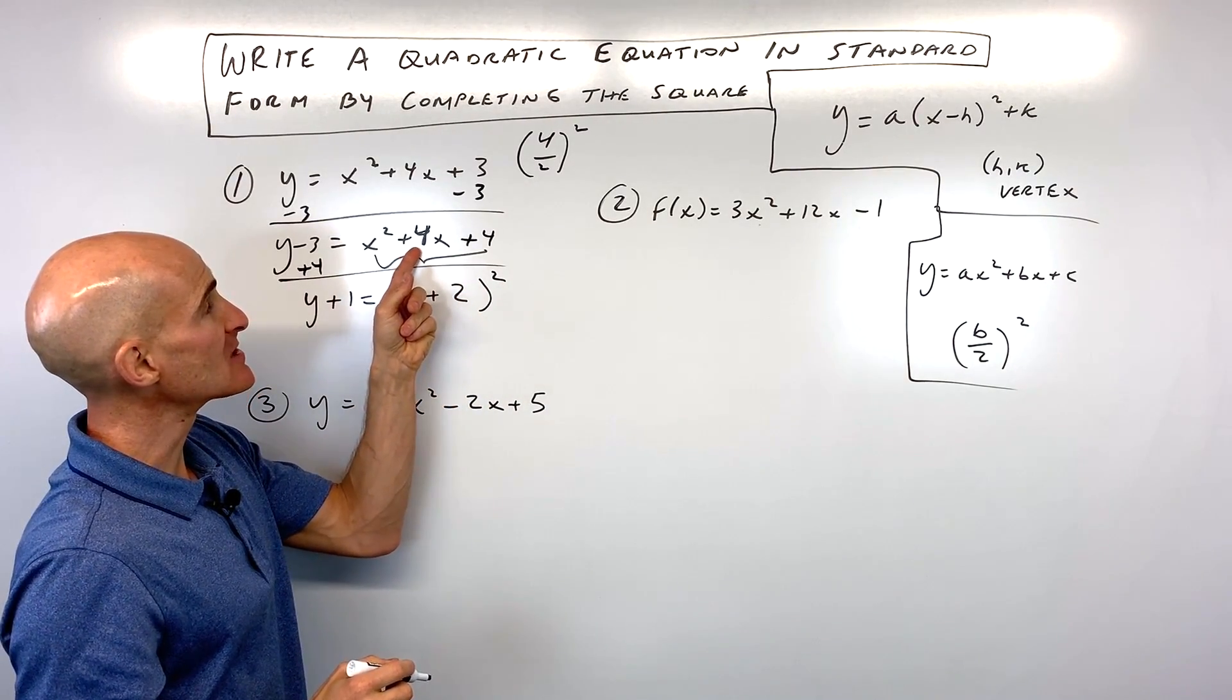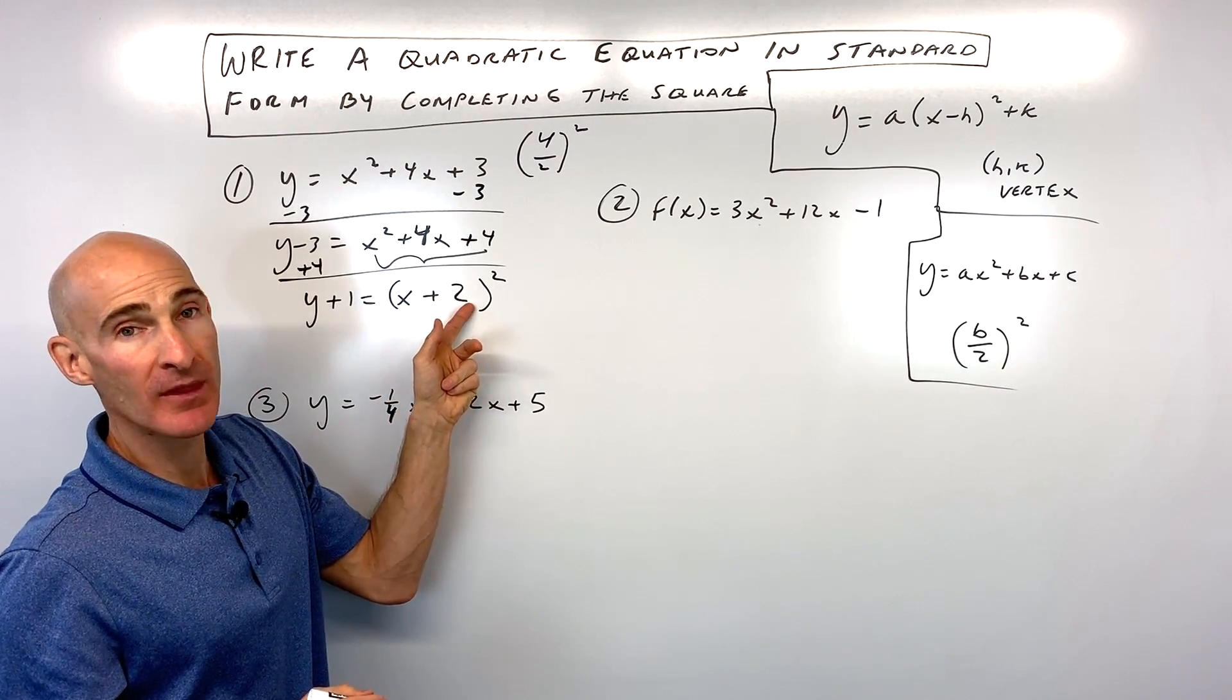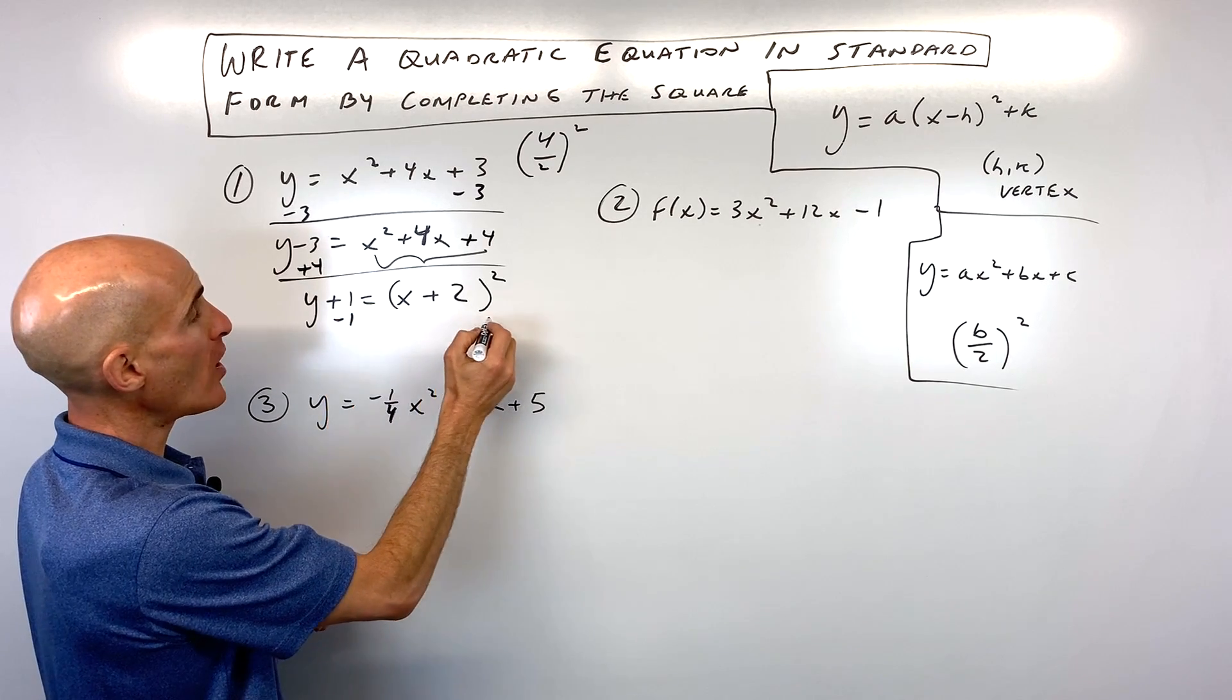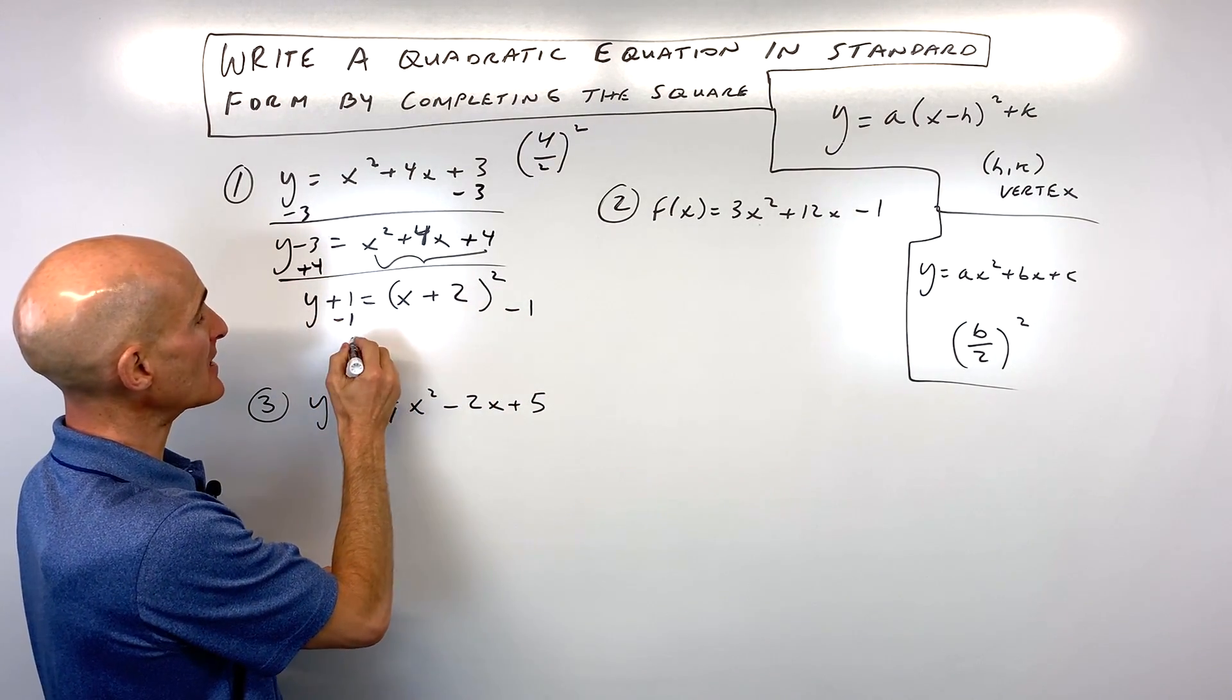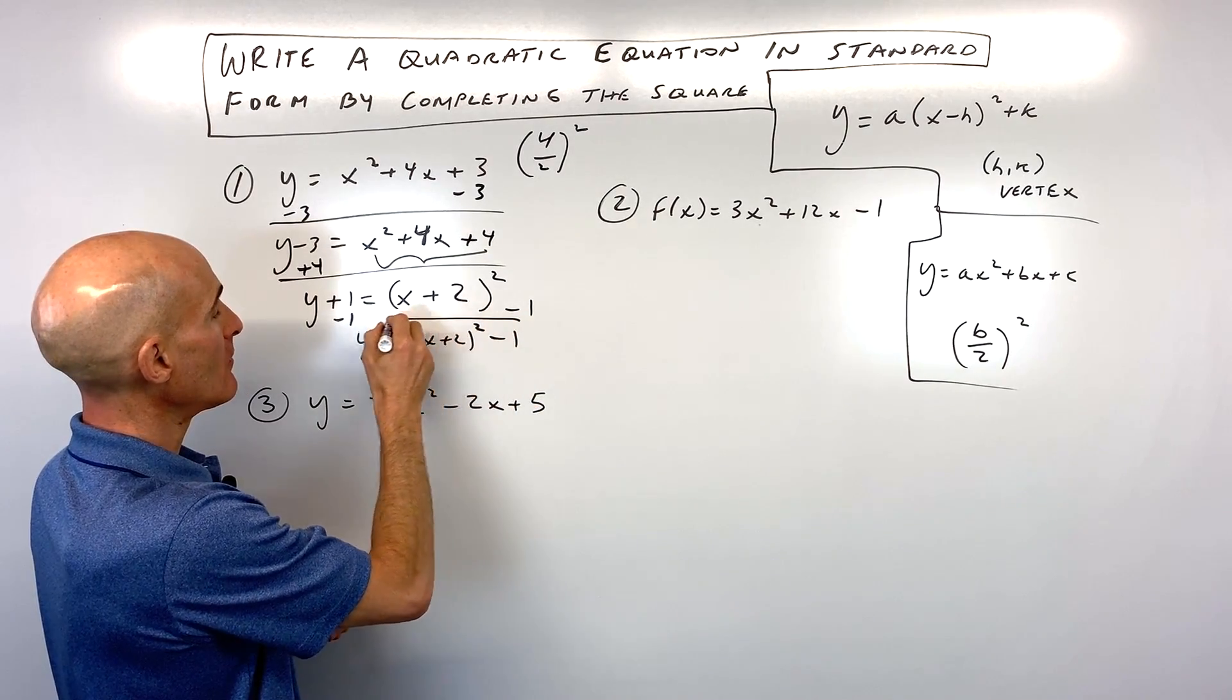It's always going to be half of this b value. So if this was minus 4x, I would write minus 2 here. Okay, we're almost there. Now the last thing is I'm going to subtract 1 because what I want to do is I want to get y by itself. So y equals x plus 2 squared minus 1.